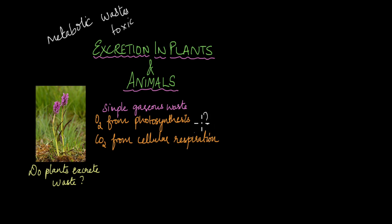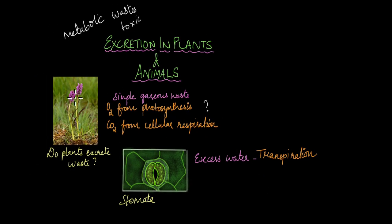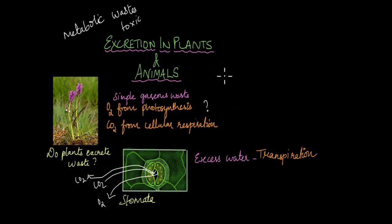How are these gaseous waste products excreted out? That is done thanks to the stomata. Stomata, as you know, are tiny pores on the leaves of plants, and it is through these pores that oxygen is excreted out and carbon dioxide is taken in. Stomata is the structure through which plants perform gas exchange and also excrete their gaseous wastes.